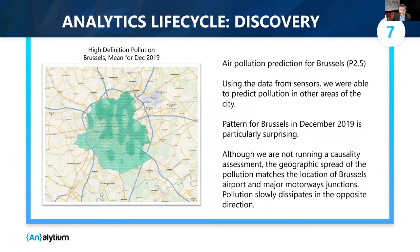We applied Kriging using SAS Viya on the data we had for Brussels. On the slides, you see average values for December 2019 for the whole city. We selected this month because in December the pollution is particularly pronounced, although still very low. Using this approach, we predict pollution in all areas of the city. The geographic spread of the pollution matches the location of Brussels airport and major motorway junctions leading to it. Pollution slowly dissipates in opposite directions from these objects.